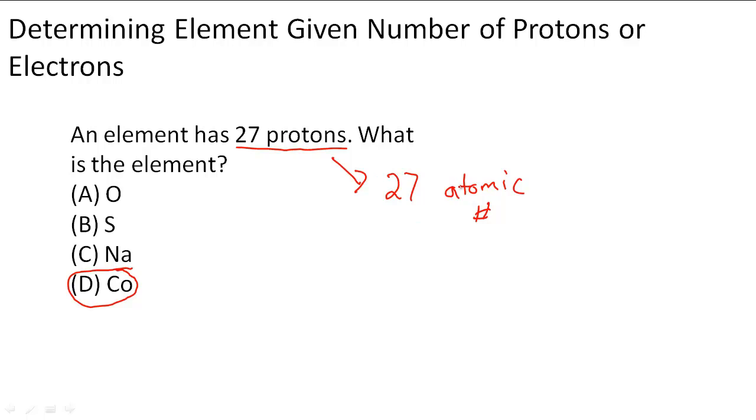Co or cobalt. And that is the element that we're looking for. Because it has an atomic number of 27, that means it has 27 protons. Now we also include electrons in this if it is a neutral element, a neutral atom of that element.